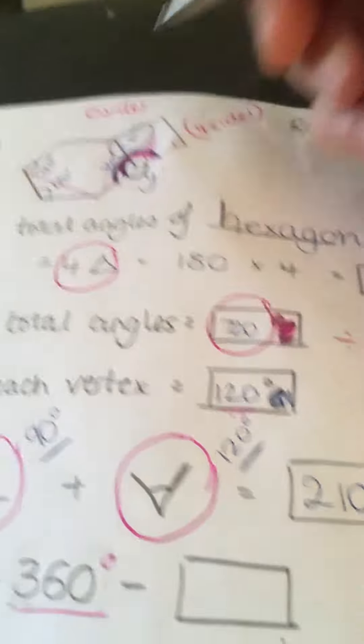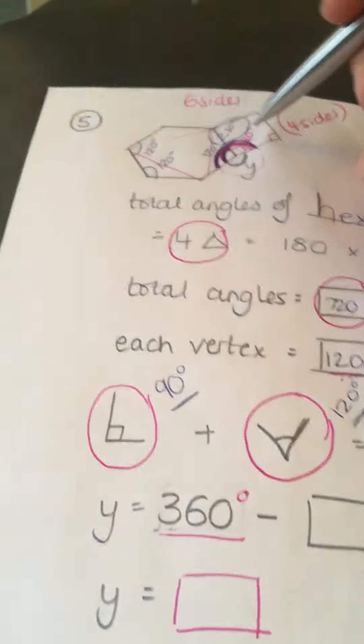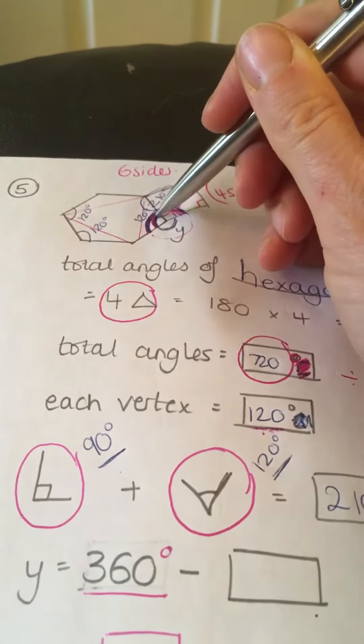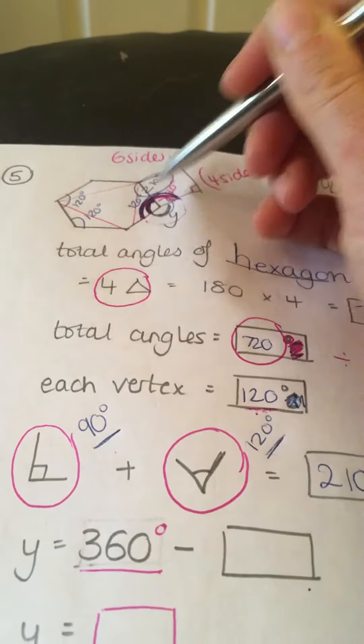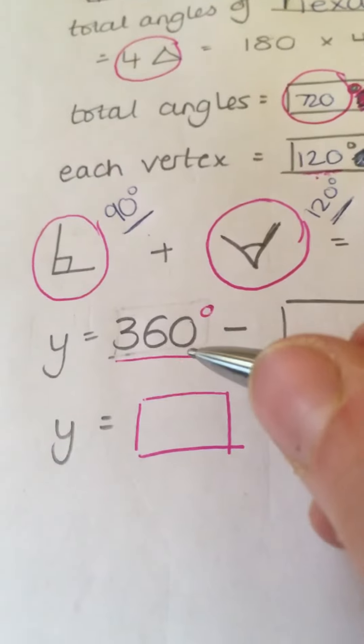So, now I need to work out Y. So, yep, you've guessed it. This entire angle here, if I can do an entire circle, and I know an entire circle is 360 degrees.